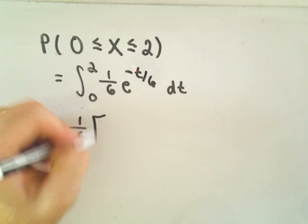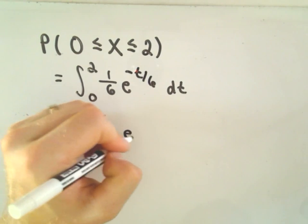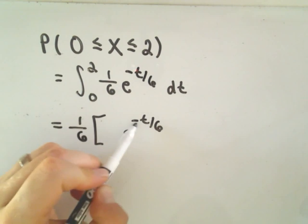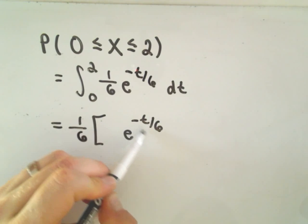Remember, if you integrate an exponential, if you're multiplying the variable by some constant, which is negative one-sixth, you actually divide by that constant.